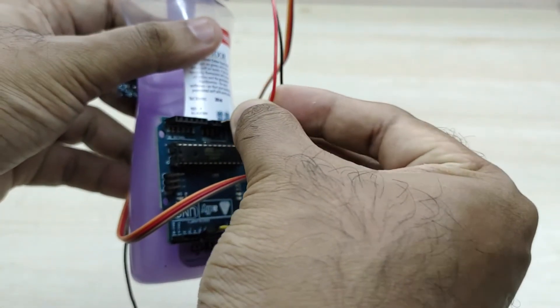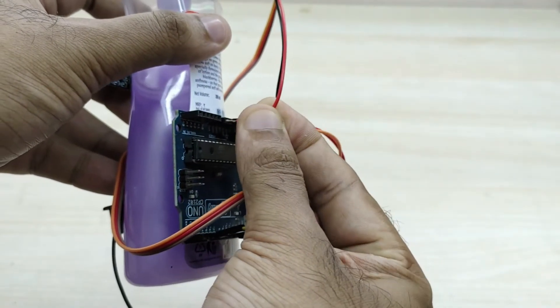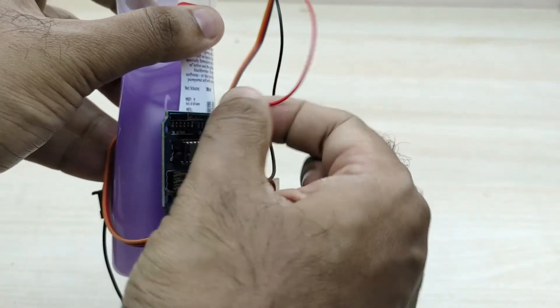Now, for powering the Arduino, the positive terminal of the battery is to be connected to the input voltage pin of the Arduino.